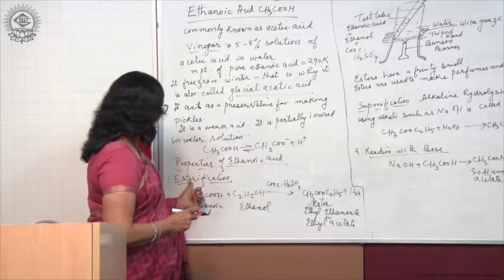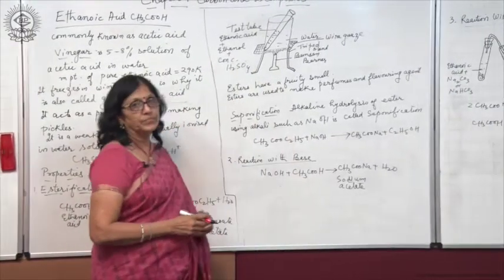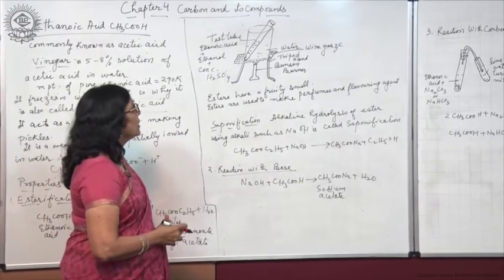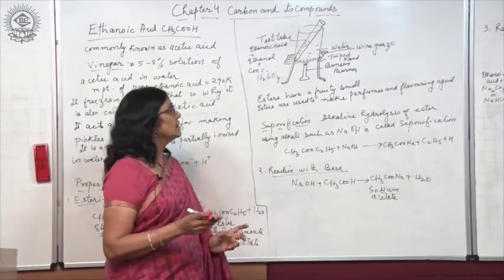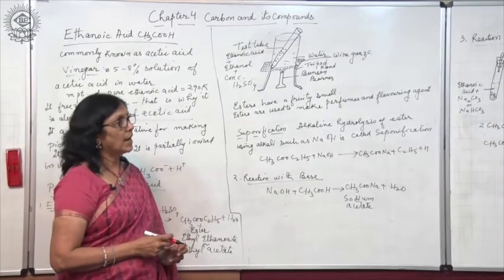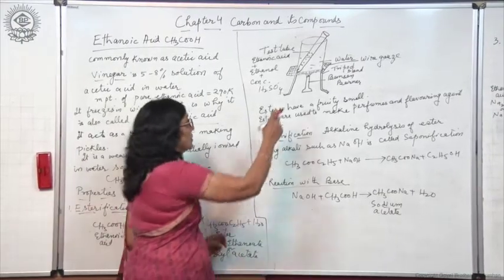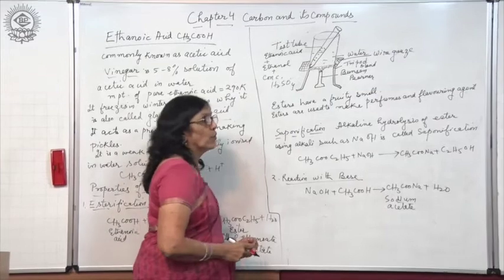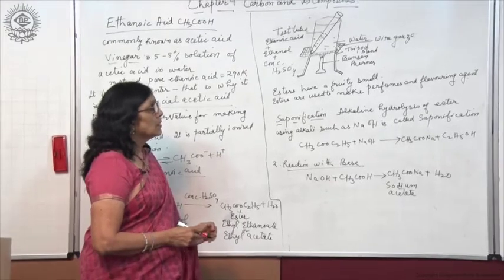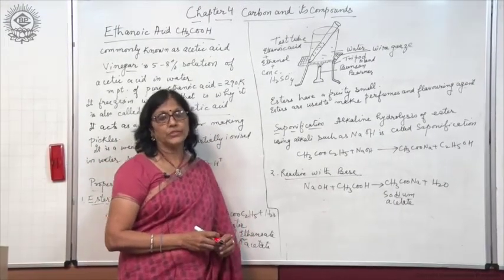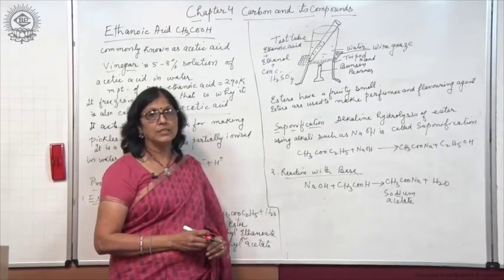Now let us discuss the chemical properties of ethanoic acid. For the first property, esterification, an activity is performed in the lab. Take a test tube with about 1 ml of ethanol and ethanoic acid, add a few drops of concentrated sulphuric acid, and then put it in a beaker containing water and heat it over a Bunsen burner.